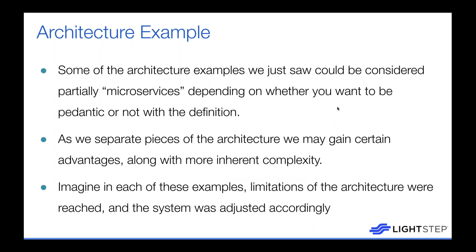Some of these architecture examples could be considered partially microservices or still called monoliths depending on your definition — they're really just architecture decisions made to gain certain advantages, but they also come with inherent complexity. Even just explaining some of those decisions was more complicated. The limitations of the current architecture were reached, and the system was adjusted accordingly.